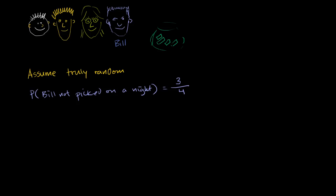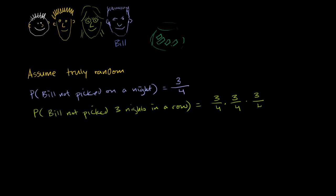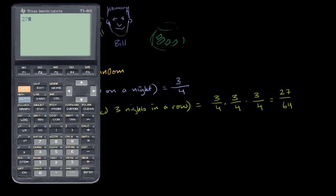What's the probability that Bill's not picked three nights in a row? That's the probability he's not picked on the first night, times the probability he's not picked on the second night, times the probability he's not picked on the third night. That's going to be three-fourths to the third power — three times three times three is 27, over four to the third power, which is 64. So that's 27 divided by 64, which equals approximately 0.42.